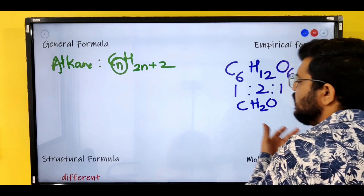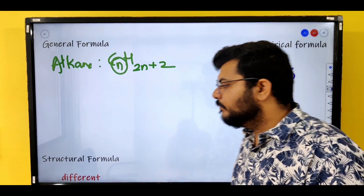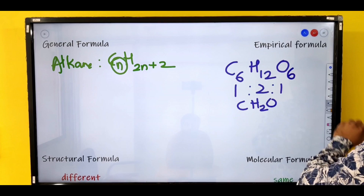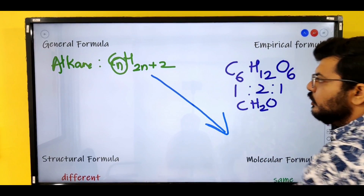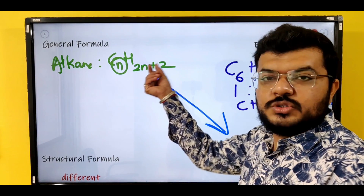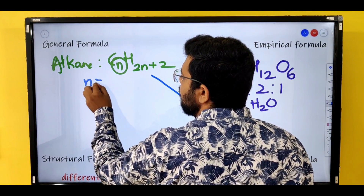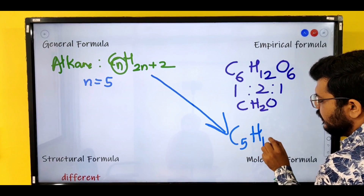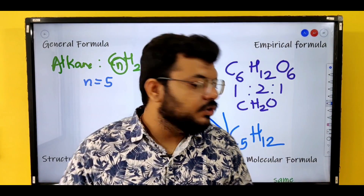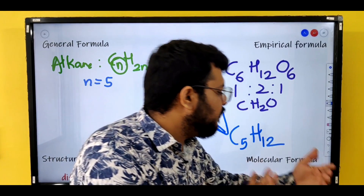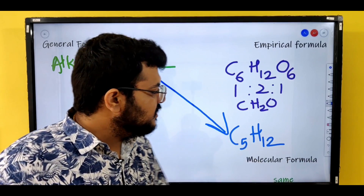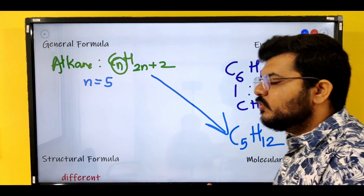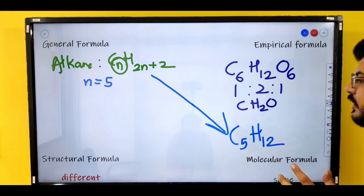Generally, a homologous series has a similar empirical formula. The next thing we have is molecular formula. Using CₙH₂ₙ₊₂, if N equals 5, the formula becomes C₅H₁₂. This is the molecular formula. It tells us how many atoms are present in the compound — carbon, hydrogen, and if it's an acid, you will have oxygen as well.